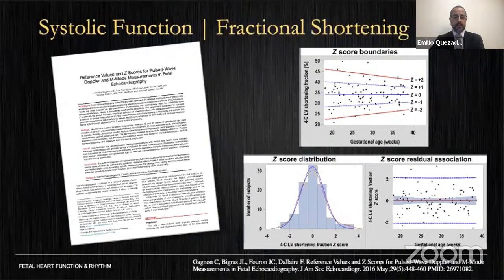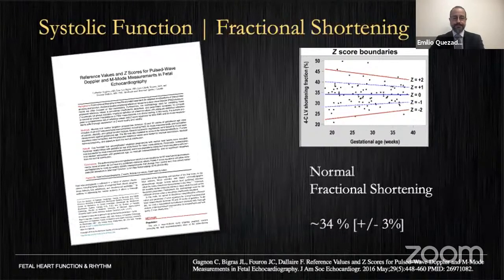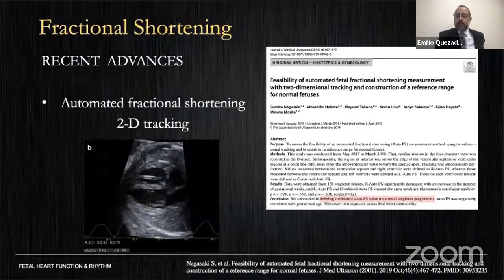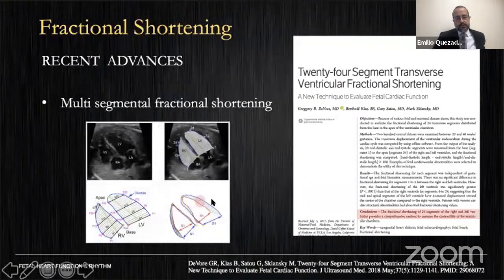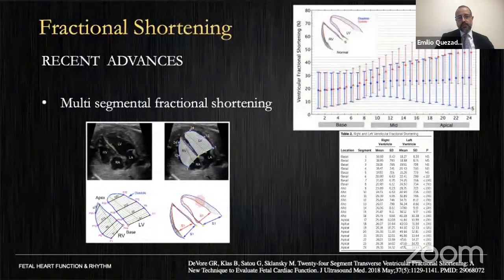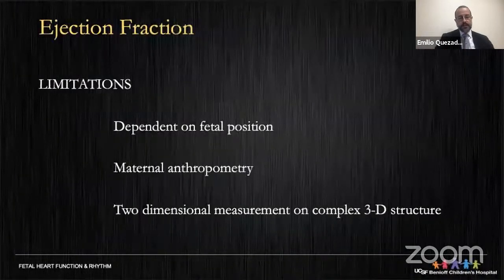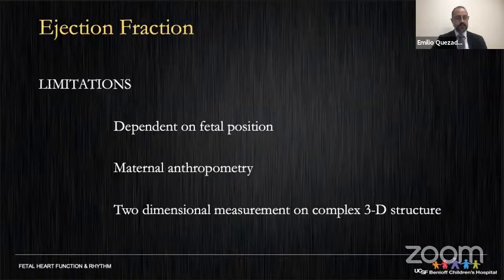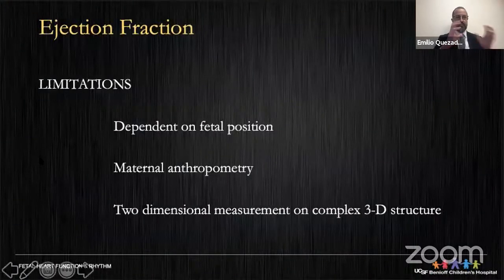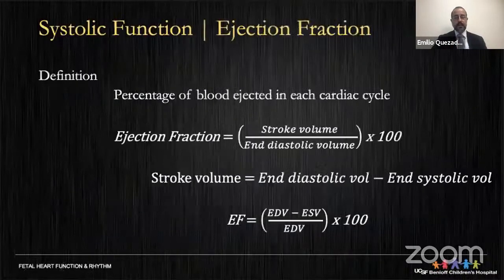A publication in JACE reported Z-score equations for 57 functional measurements, including fractional shortening — the normal value is typically 34%. Recent advances include automated 2D tracking, where the machine measures fractional shortening actively, and a multi-segmental method measuring 24 segments simultaneously in systole and diastole. Limitations include fetal lie, challenging maternal body habitus, and the fact that this is a 2D measure of a complex 3D structure.